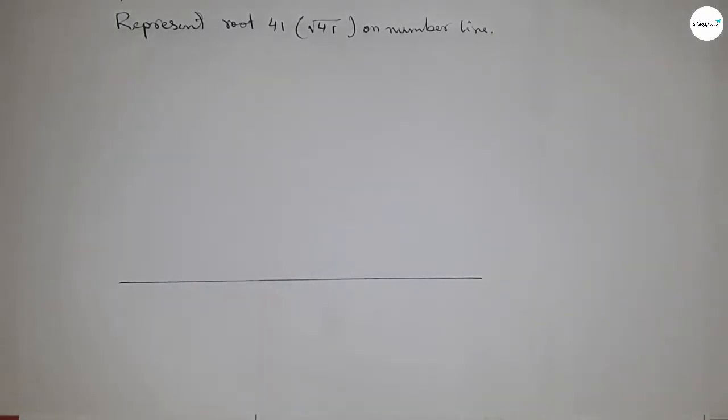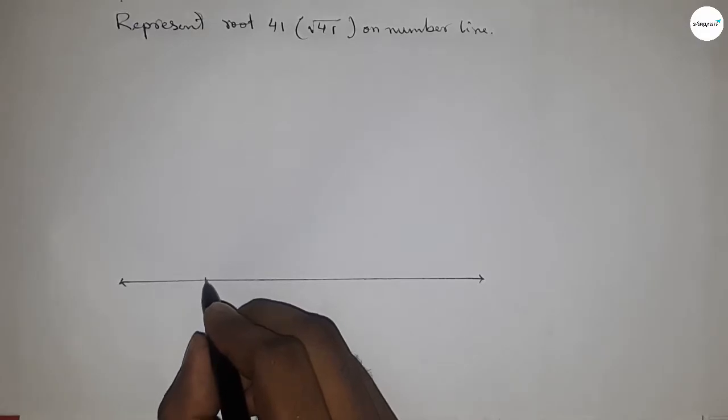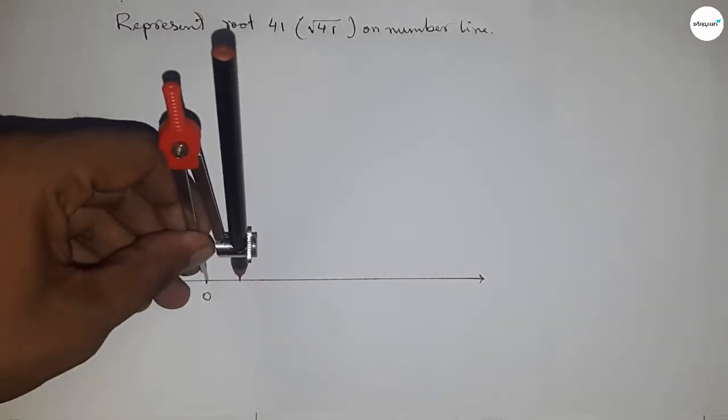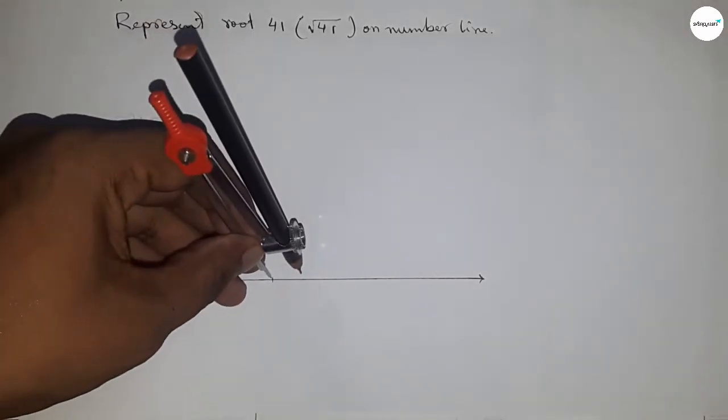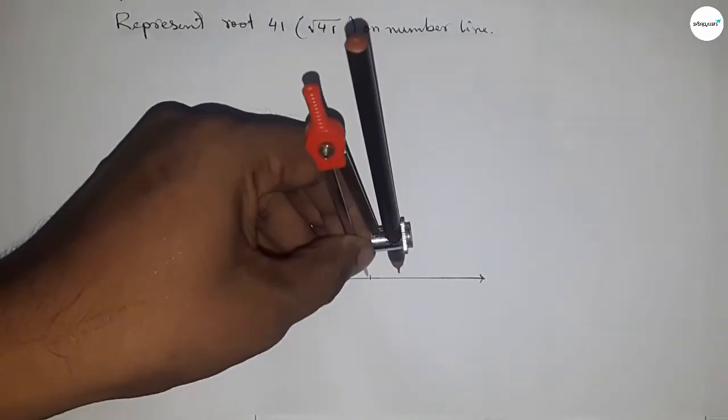Draw a line of any length and mark the ends with arrows. Take the starting number as zero. Next, take any length by compass and mark the numbers on the line.